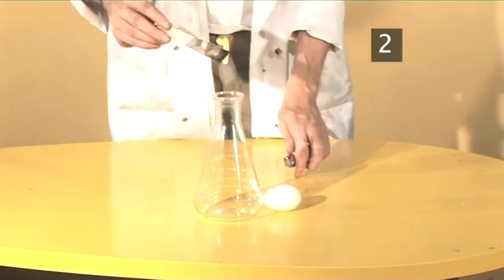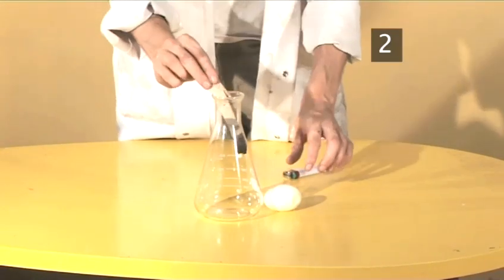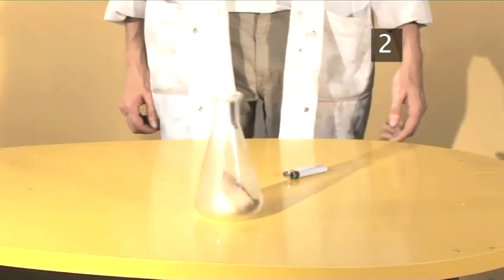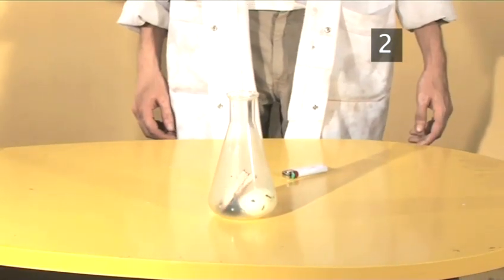Light a piece of paper and carefully place it in the bottle. Then quickly pop the egg back in the neck of the bottle and watch what happens. The egg will be sucked into the bottle and remain fully intact.